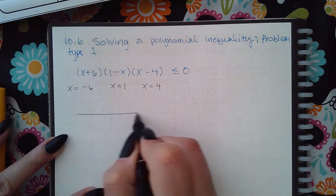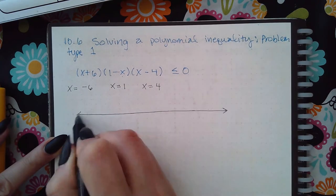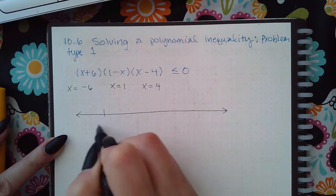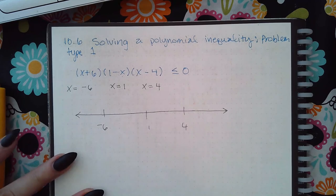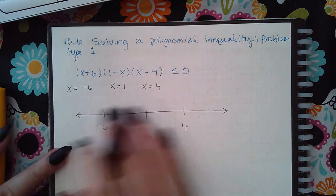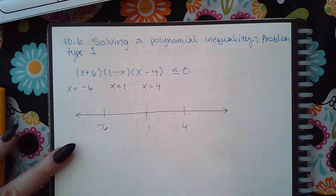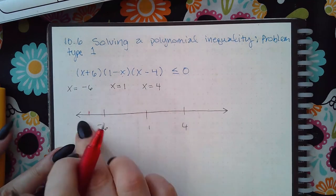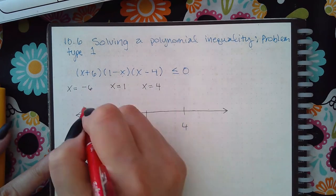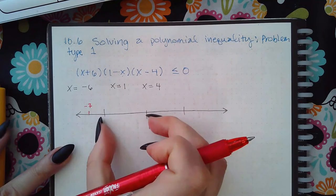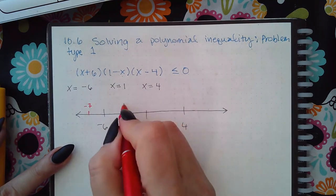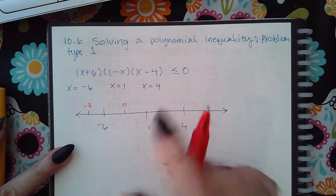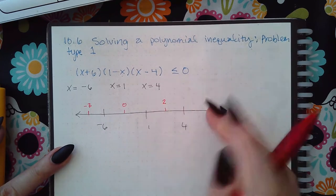Those happen to already be in order, but I would put them on a number line in order and the spacing doesn't matter, it's just a representation so that you can figure out what's going on. You pick a value in this interval, I'm going to pick negative 7. In this interval I'm going to pick, every time I have a negative and a positive I always pick 0.